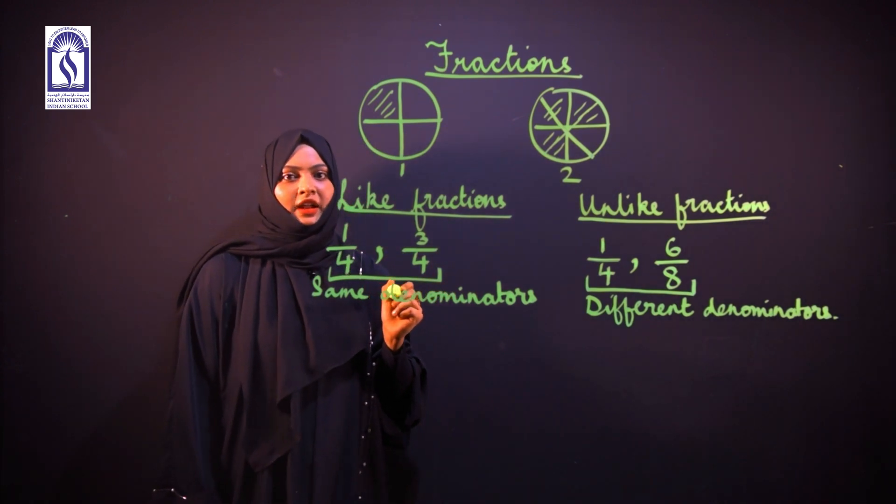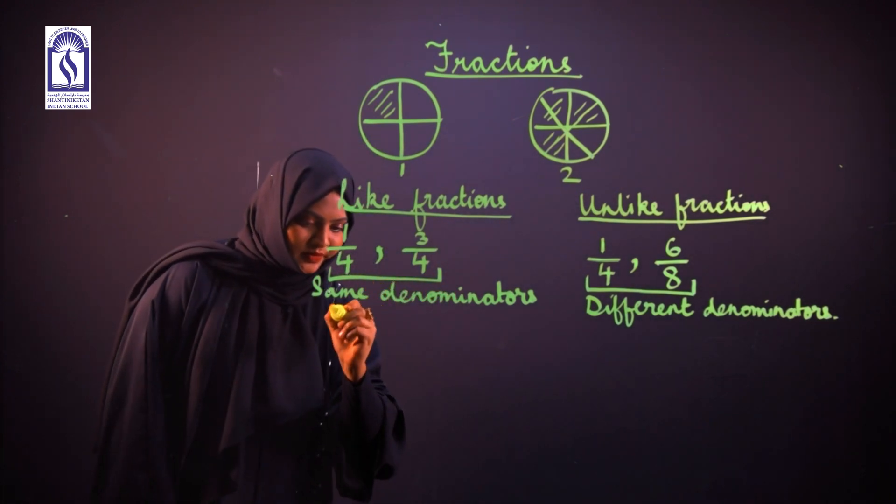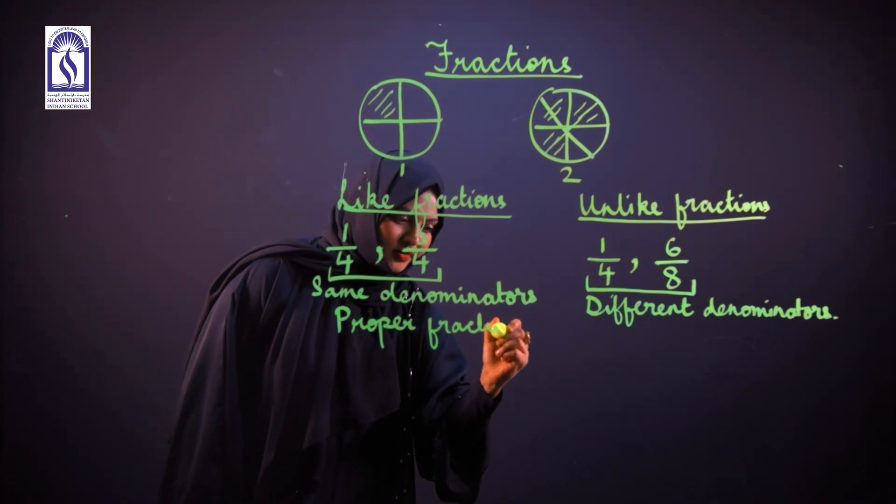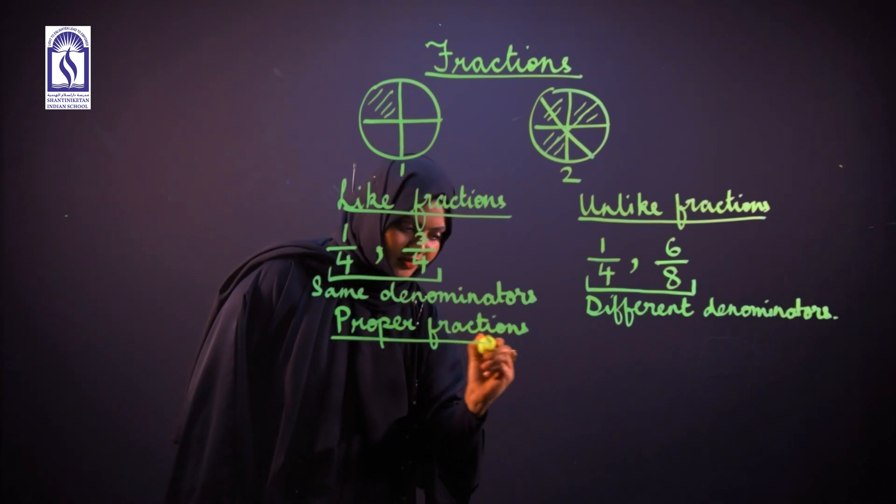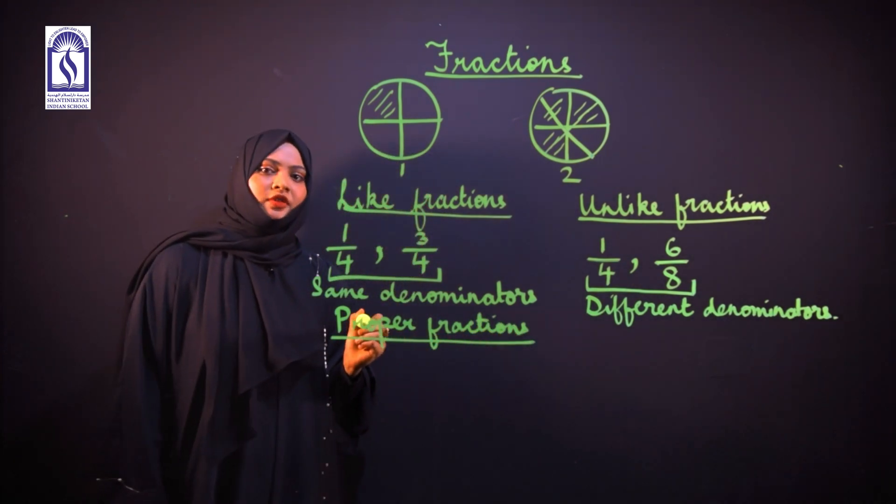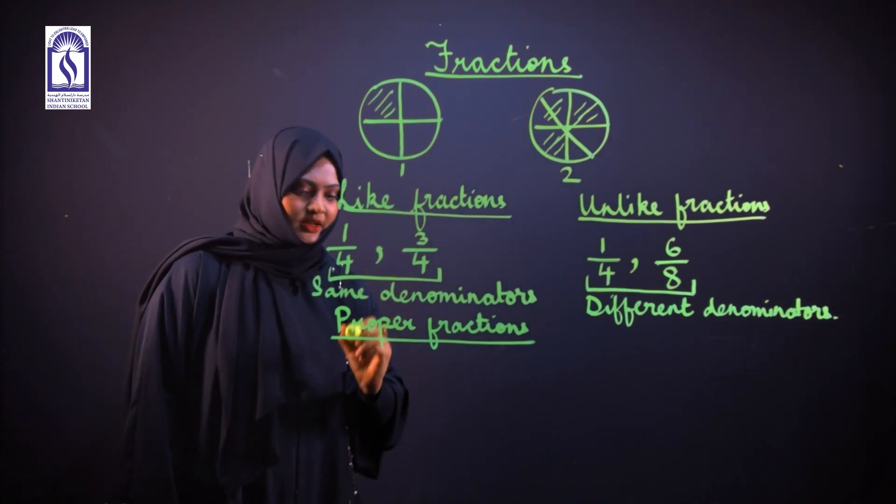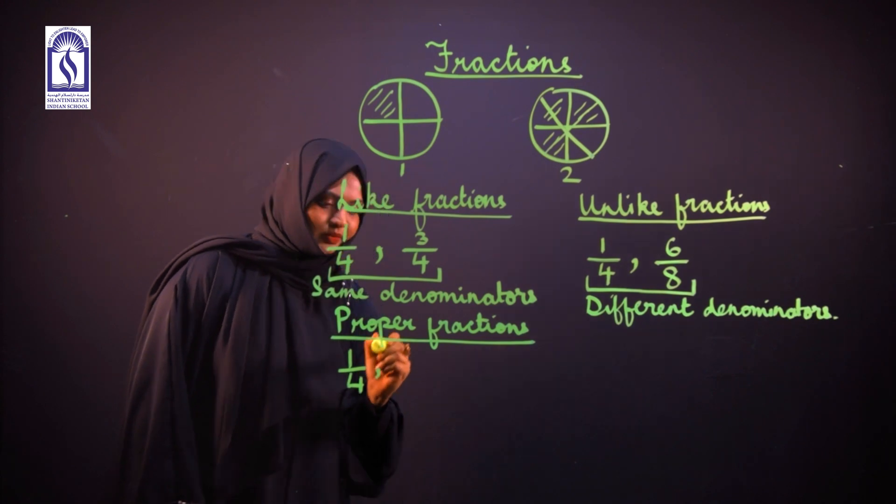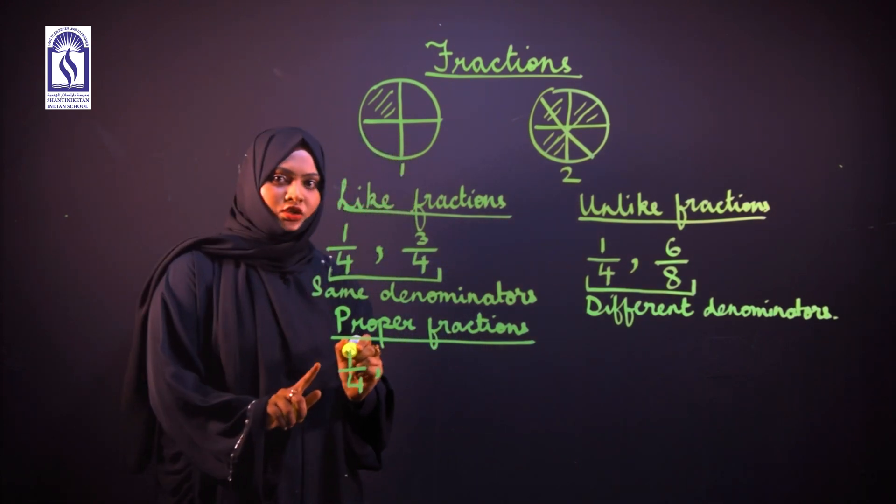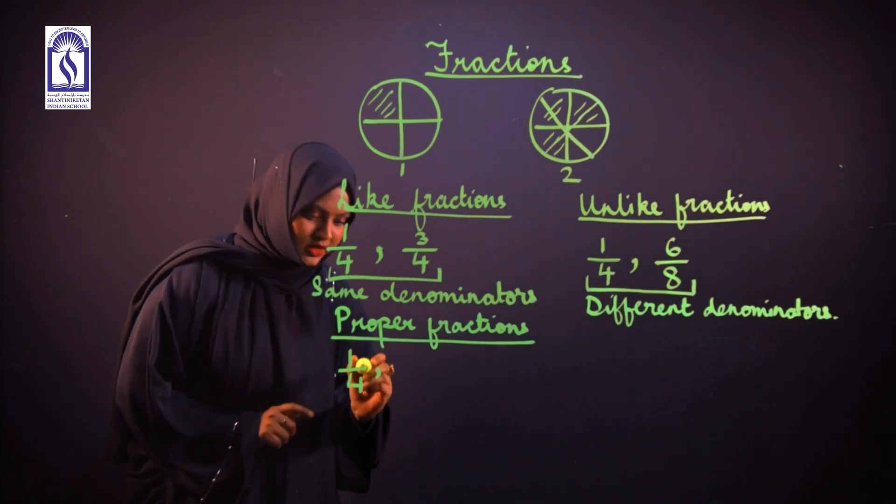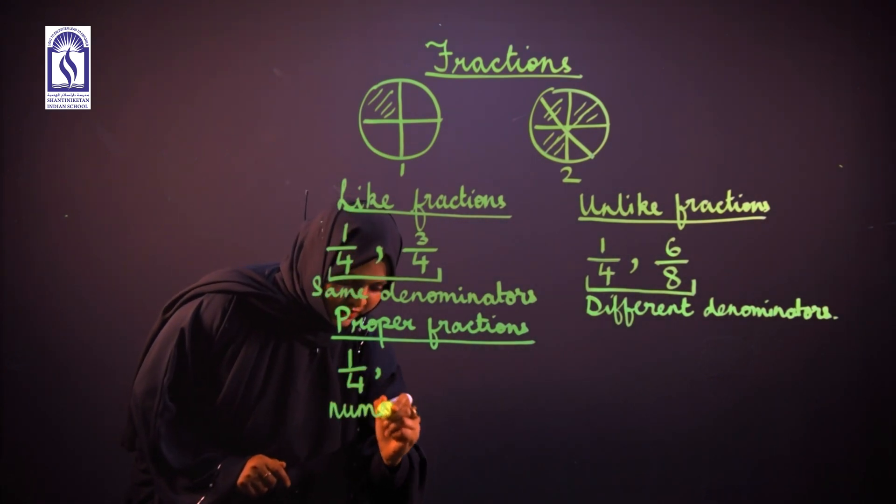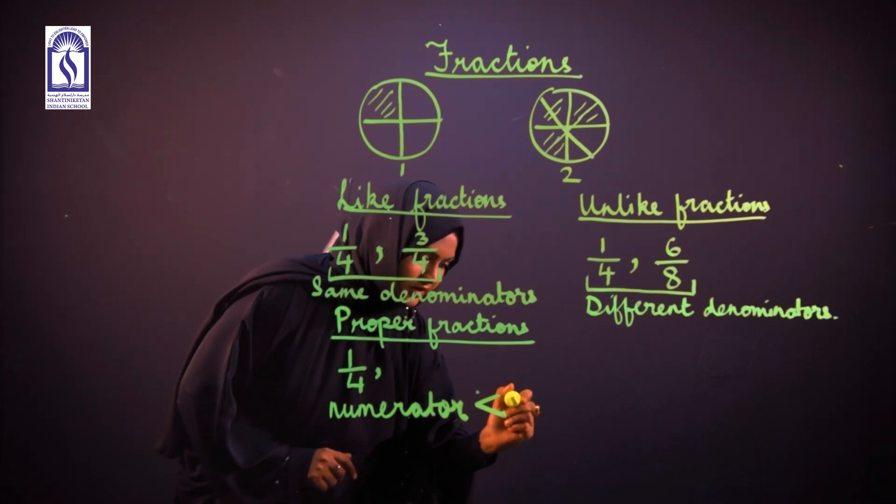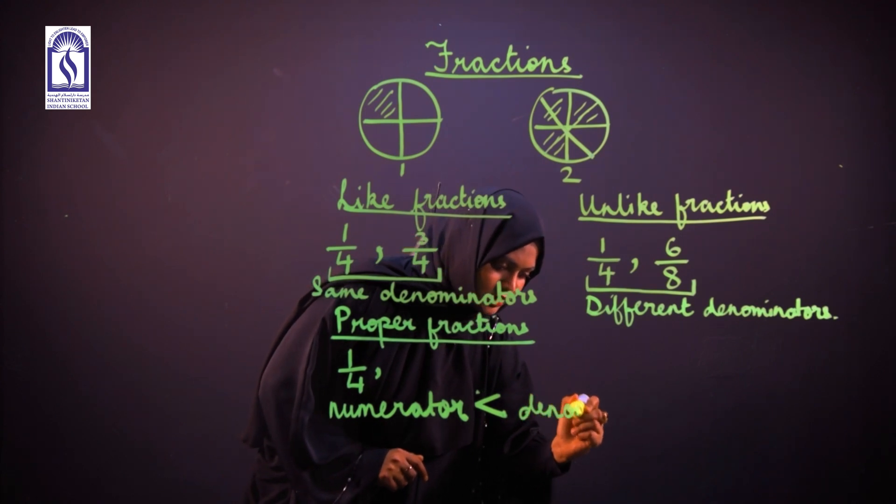The next type of fraction is proper and improper fractions. In proper fractions, the numerator is smaller than the denominator.